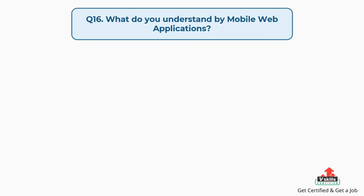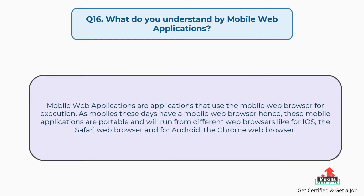Question number 16: What do you understand by mobile web applications? Mobile web applications are applications that use the mobile web browser for execution. As mobiles these days have a mobile web browser, these mobile applications are portable and will run from different web browsers — for iOS, the Safari web browser, and for Android, the Chrome web browser.